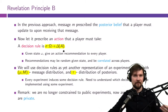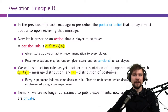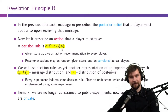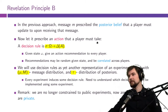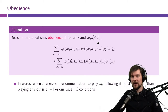This recommendation, generated by the experiment based on the true state of the world, will be correlated with that true state. Now, how do we use this? What are the set of good decision rules we can use?